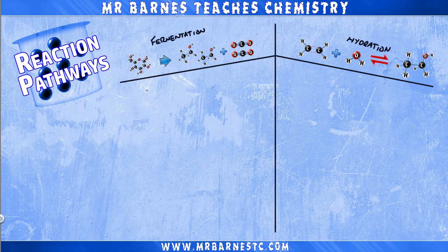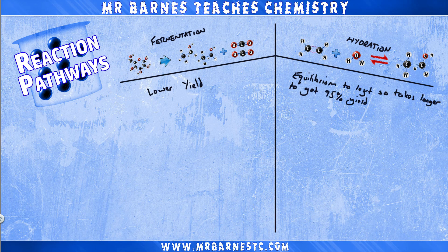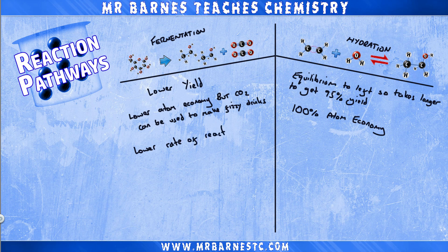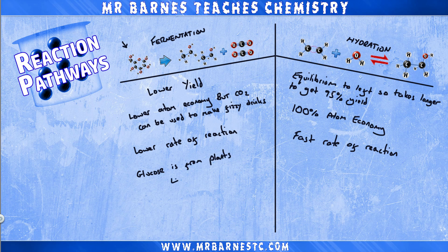So if we compare the two: fermentation had a lower yield than ethene, which was 95%, but because the equilibrium was to the left, it will take longer to get that 95% yield. Fermentation has a lower atom economy, but the carbon dioxide can be used to make the bubbles in fizzy drinks. Whereas ethene gives 100% atom economy — if you only want to produce ethanol, that's a massive advantage. Fermentation also has a lower rate of reaction than using ethene, so that's a disadvantage. The other thing to consider is where we get these raw materials from. Glucose is from plants, which can be renewable as long as you replant the plants. Ethene is from crude oil, which is definitely not renewable, so that's a disadvantage.